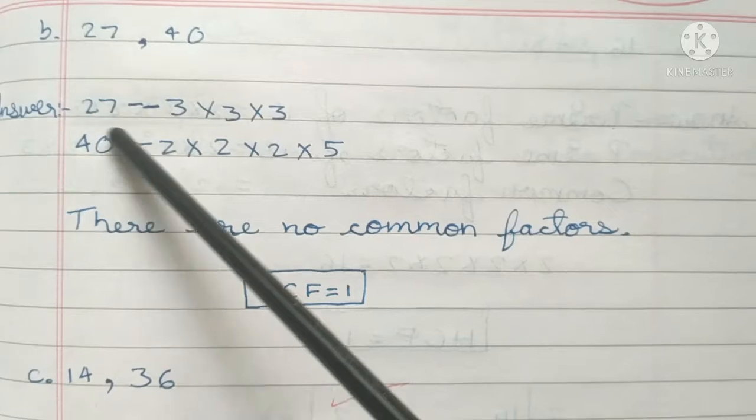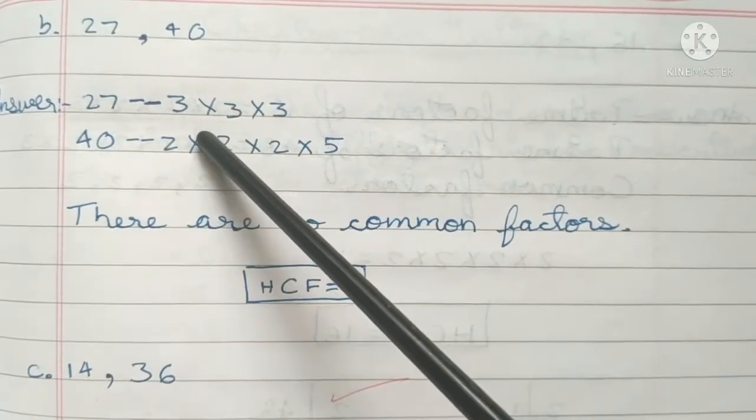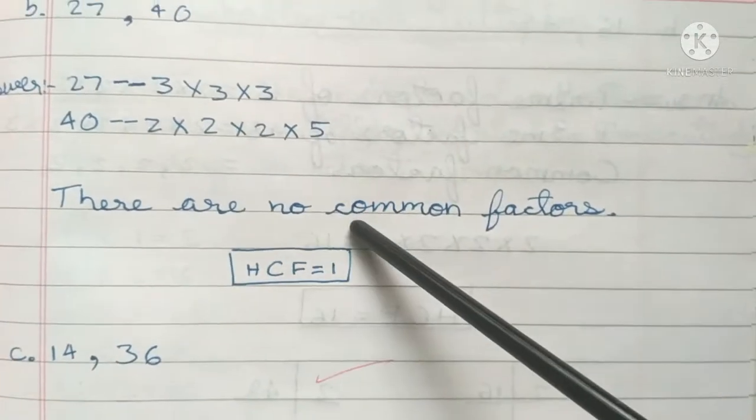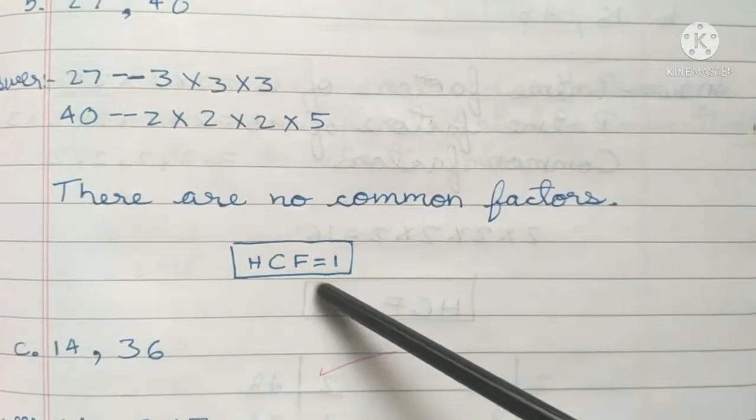27 and 40: 27 is 3×3×3; for 40, 2×2×2×5. Therefore, there are no common factors. HCF is 1.